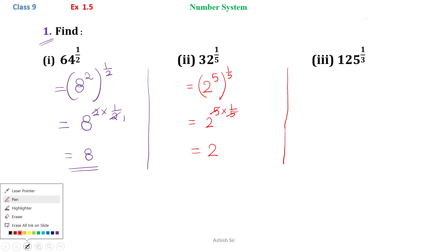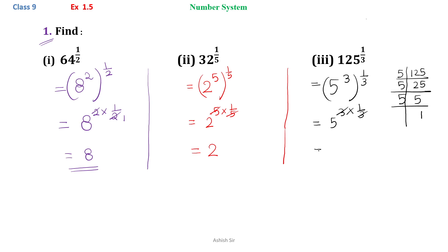Now we have the other part, 125 to the power 1 by 3. We know that 125, if we find the factors of 125, 5 times 5 is 25, 5 times 5 is 25, 5 times 1 is 5. So we can write 125 as 5 to the power 3 to the power 1 by 3. Now this equals to 5 to the power 3 into 1 by 3. 3 and 3 get cancelled, and we are left with 5. So 125 to the power 1 by 3 is 5.